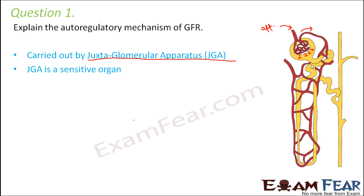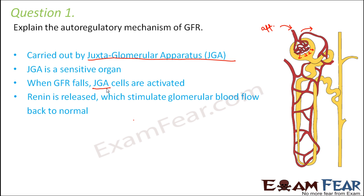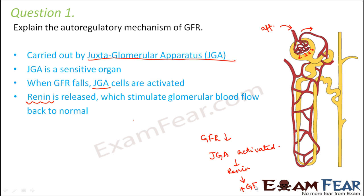It is a very sensitive organ. Whenever the GFR falls, these JGA cells get activated and release a substance called renin. Renin stimulates the glomerular blood flow back to normal, increasing the glomerular filtration rate. So whenever GFR decreases, the JGA releases renin to bring it back up — this is the auto-regulatory mechanism of GFR.